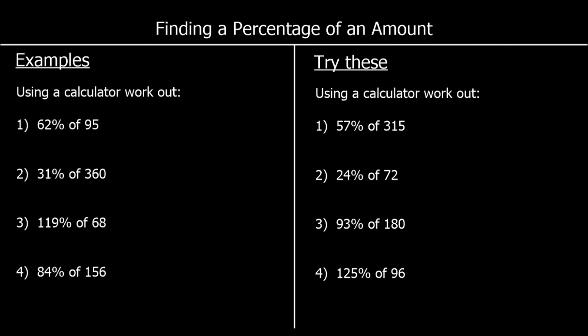Now we're going to look at finding a percentage with a calculator. There are different options: we can convert the percentage to a decimal or a fraction before we work it out, or we could use the percentage button on the calculator. The key thing to know is that 'of' can be changed to a multiplication. So it's 62% times 95, or 62% as a decimal or fraction times 95.